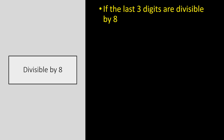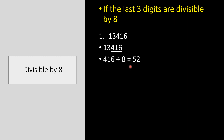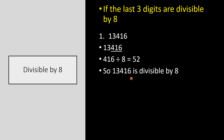Let us check the divisibility rule for 8: if the last three digits are divisible by 8, then the number is divisible by 8. For example, 13416 — the last three digits are 416. Since 416 divided by 8 equals 52, it is divisible by 8, so 13416 is also divisible by 8.